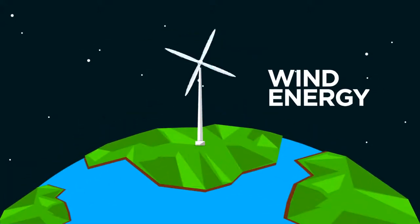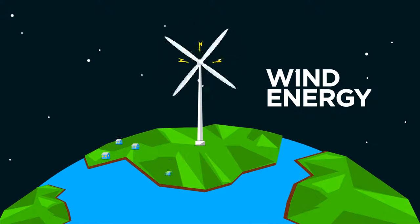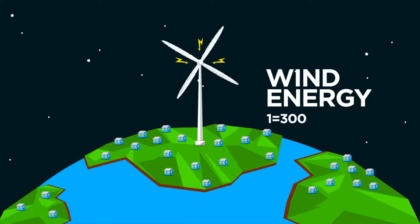Wind energy converts kinetic energy acting on rotor blades into mechanical energy, which is powered through a generator to produce electricity. One wind turbine can produce enough energy to power 300 homes on average.